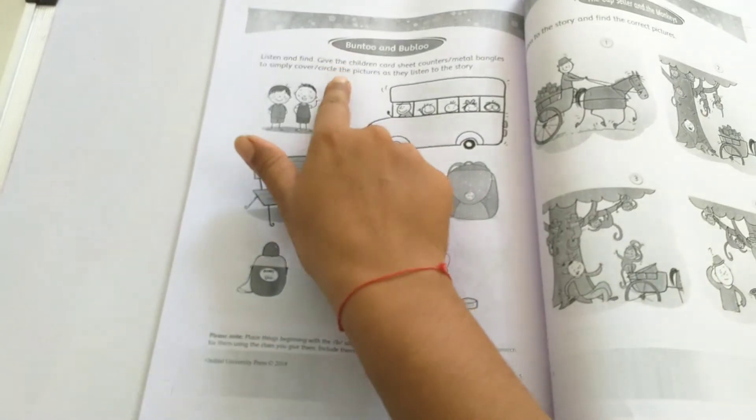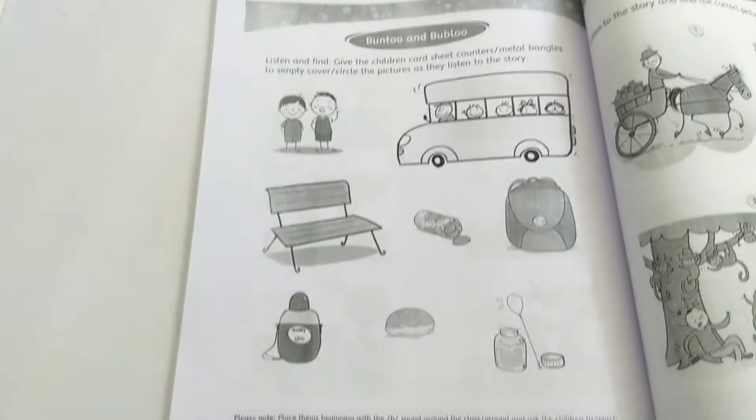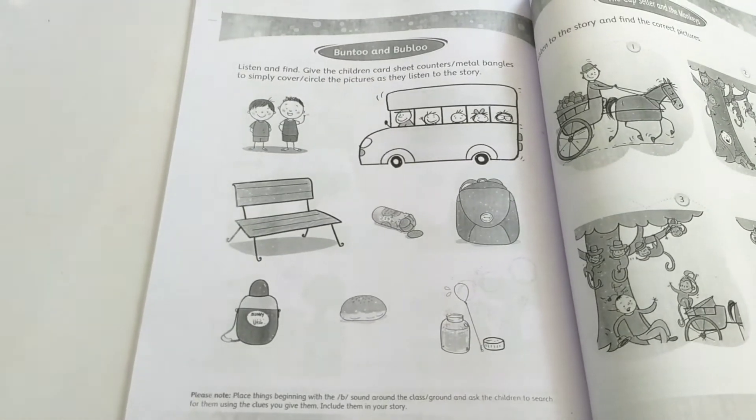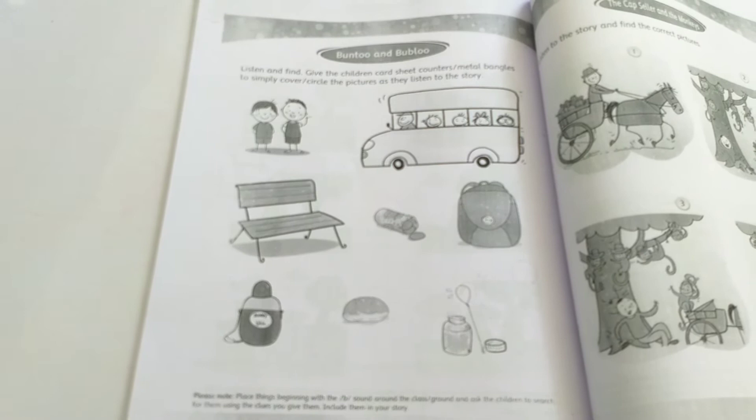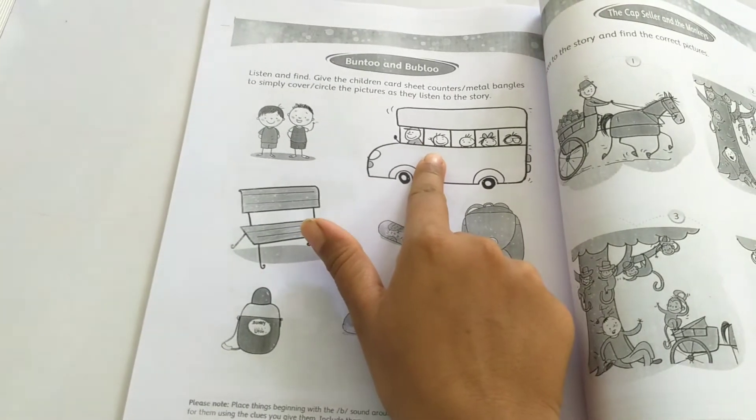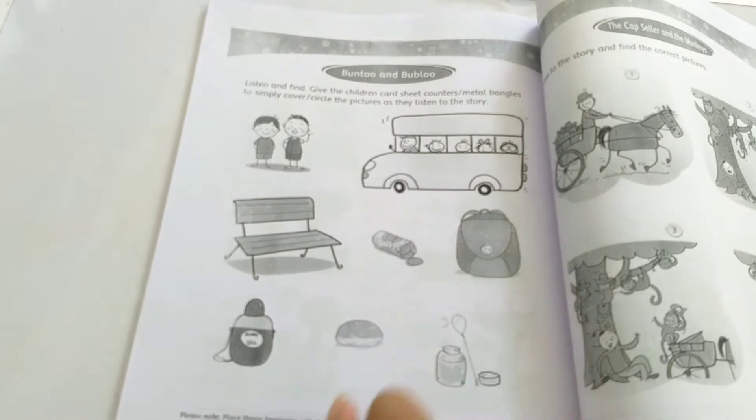It is B for Bantu and Babalu story. I will tell you the story of Bantu and Babalu. Bantu and Babalu go to play in the park in the bus. They carry a bottle of water in a blue bag with a big button.